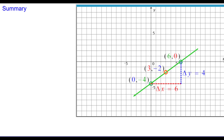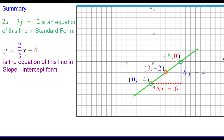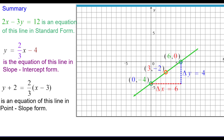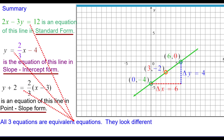Let's summarize. Here's the equation of this line in standard form. This is the equation of the line in slope-intercept form. And this is an equation of this line in point-slope form. All of the equations are equivalent equations — they look different, but they represent the same set of points, so they're called equivalent equations.